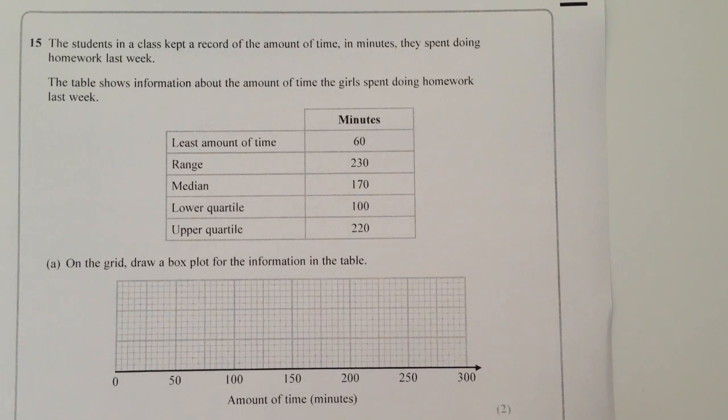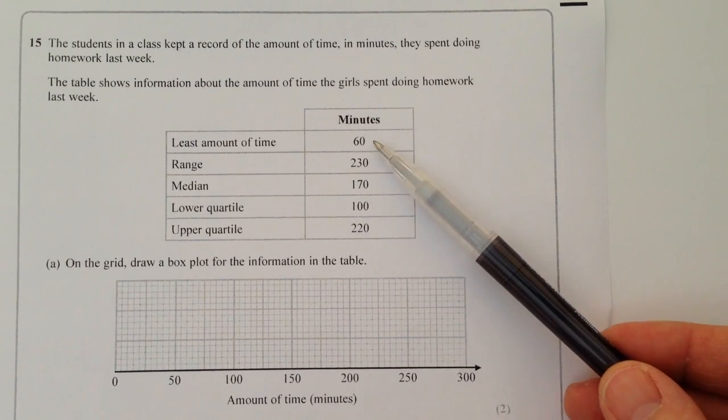The issue really is that they're asking us to draw a box plot on this grid paper to represent this information. Now they do give you all the information that you require, however you've got to be a little bit careful because it tells you the least amount of time is 60 minutes, but then it tells you the range.